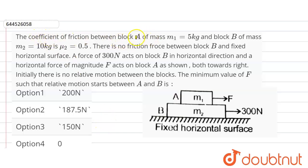The coefficient of friction between block A of mass m1 is 5 kg and block B of mass m2 is equal to 10 kg is mu equals 0.5. So coefficient of friction here mu is given as 0.5.